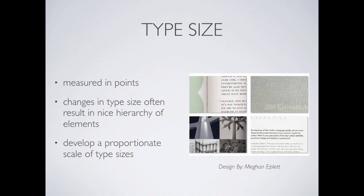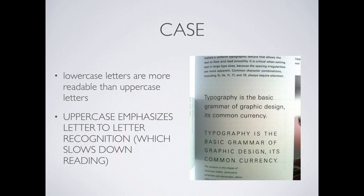Type size is measured in points. Changes in type size result in a hierarchy of elements — if you have a 16 point, a 12 point, and a 10 point, that gives you a hierarchy: headlines, subheadlines, body, footnote. You want to develop a proportionate scale of sizes so it feels like they belong together, and then be consistent. If you set up your headline as 16 point and it varies between 18 and 14, you're defeating the purpose. You have to be consistent throughout the document. We'll talk about how to do that in InDesign.